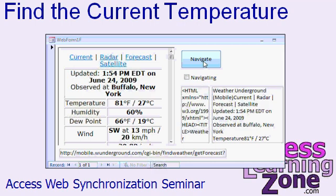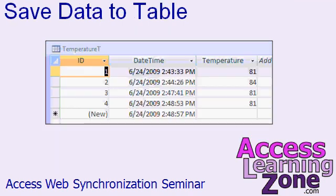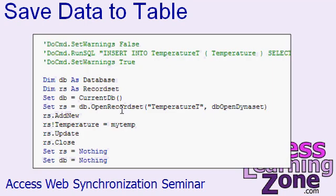We'll use our little web browser to find the current temperature using a popular mobile site and read the page data to pick out the temperature information. We'll learn how to take all that temperature data and save it to a table, so every time we run it, it saves a history of all those temperatures. I'll teach you how to program a record set to save data to your table — for those who haven't taken my Access 320 or 329 classes, I'll spend a few minutes showing you how to create a record set in code.